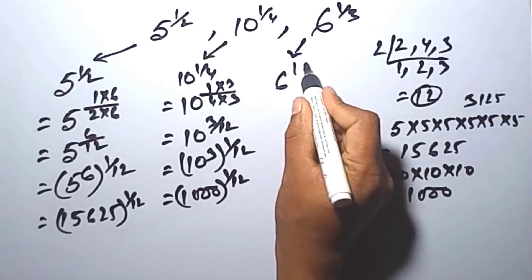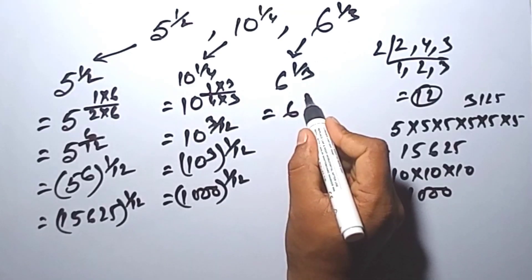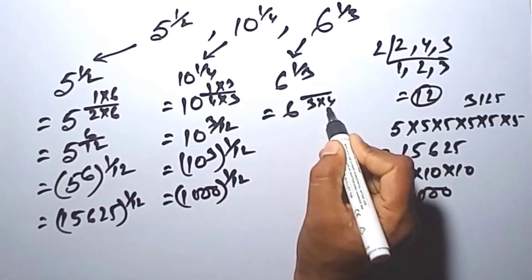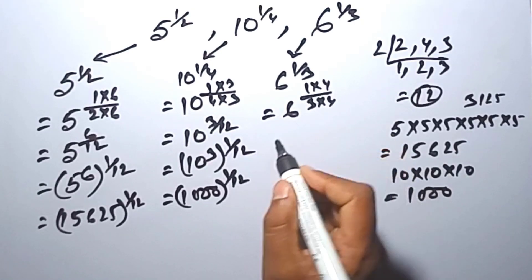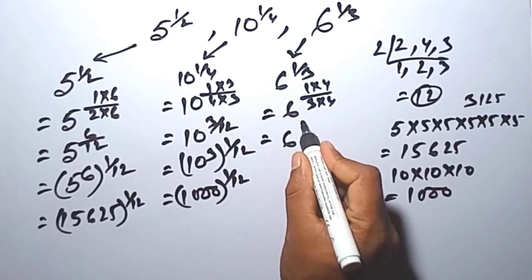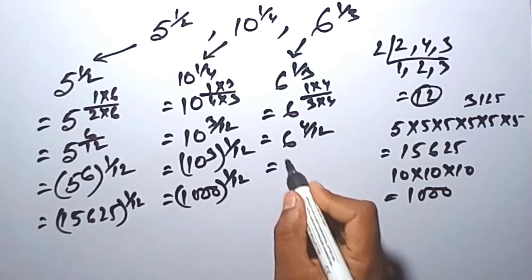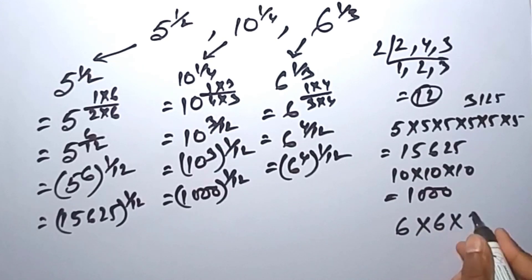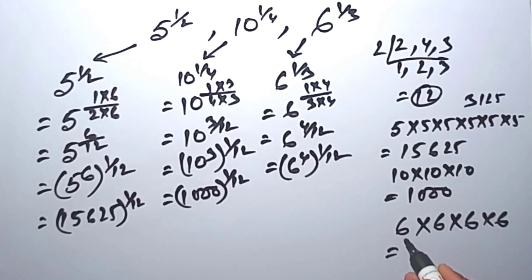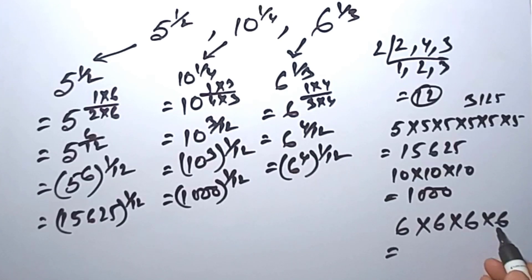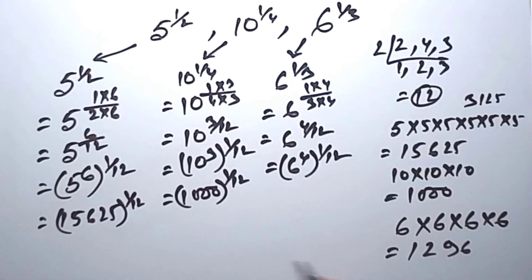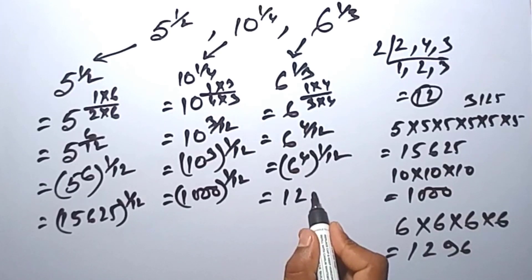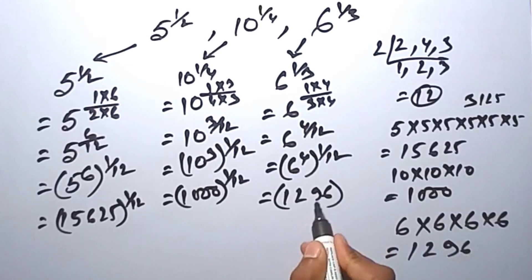Similarly, this we can write — we can make this the 12. So 3 into 4, we can write above 3. So now this we can write 4 by 12. So 6 into 6 into 6 into 6: 6 into 6 is 36, 36 into 6 is 216, 216 into 6 is 1296. So the value is 1296 to the power of 1 by 12.